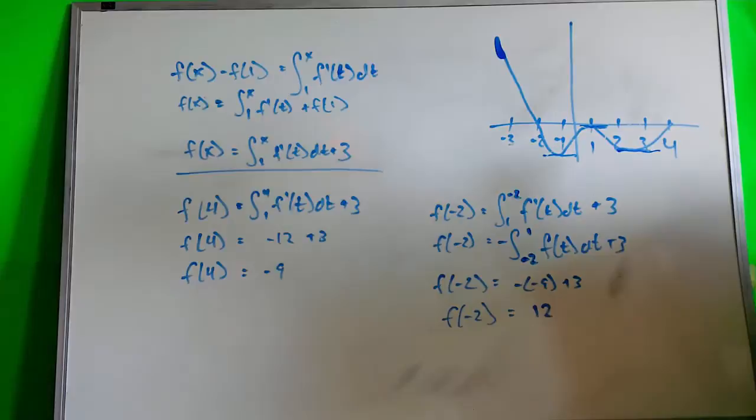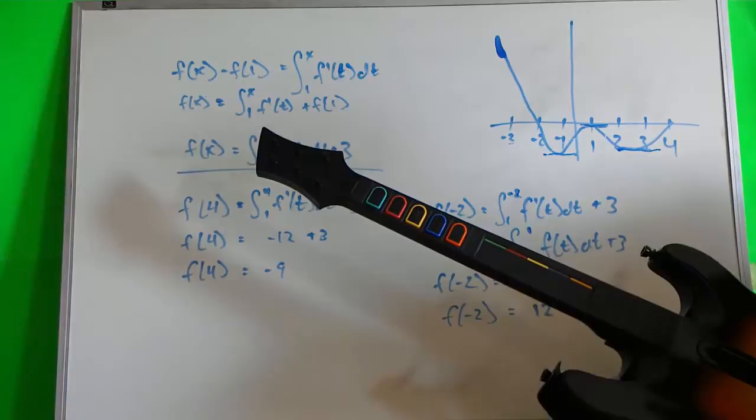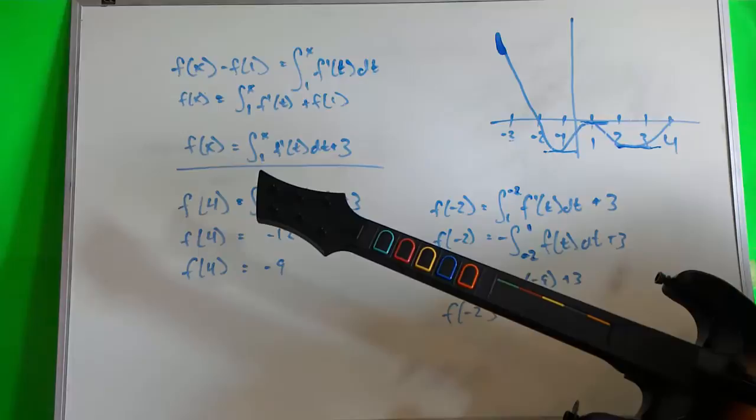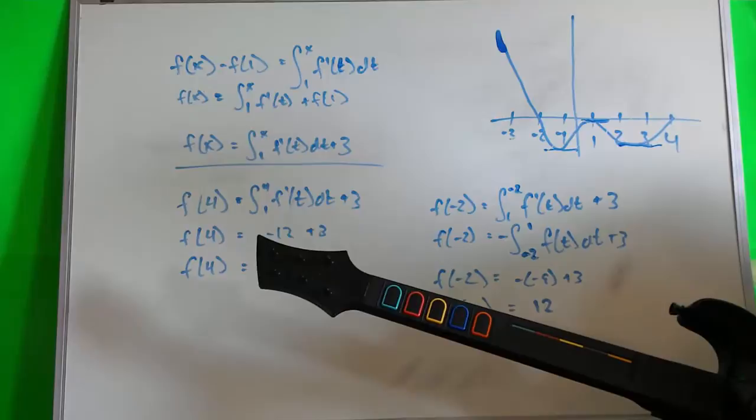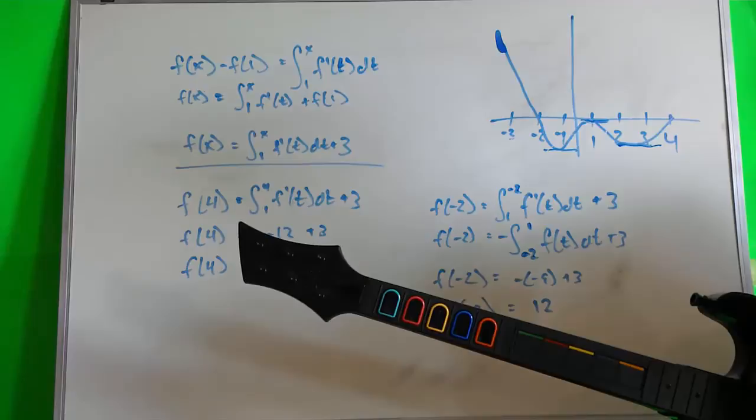So, with that, we can use it to find an expression for f of x. So, we got f of x equals the integral from 1 to x of f prime of t plus f prime of 1. And from the given, we know that f prime of 1 is 3, so our equation is f of x equals the integral from 1 to x of f prime of t dt plus 3. So, that is f of x.